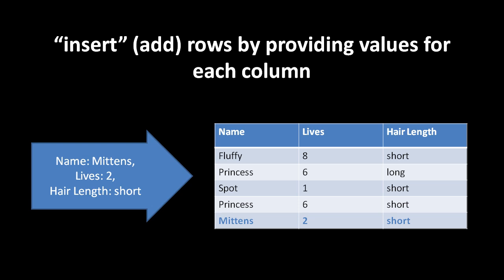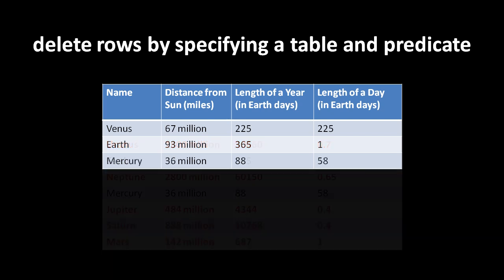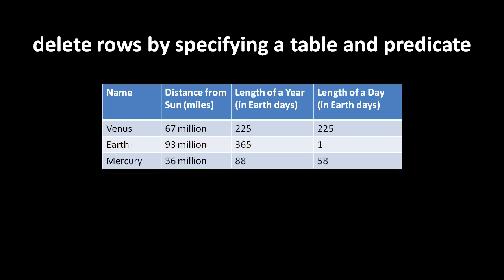When it comes time to remove rows from a table — to delete them — we specify a predicate used to filter and select rows, and then delete them. Here in our planets table, if we delete rows by specifying a predicate of distance from sun greater than 100 million miles, that effectively specifies Uranus, Neptune, Jupiter, Saturn, and Mars, and then deletes them.